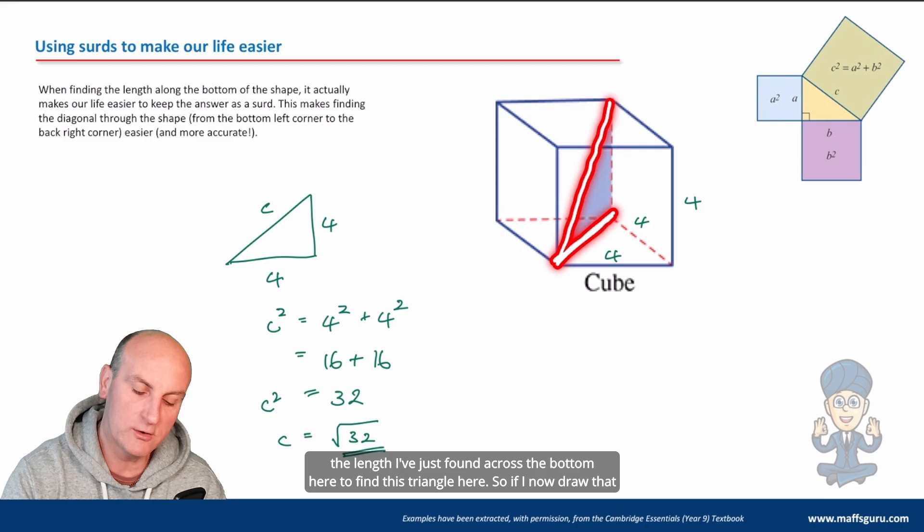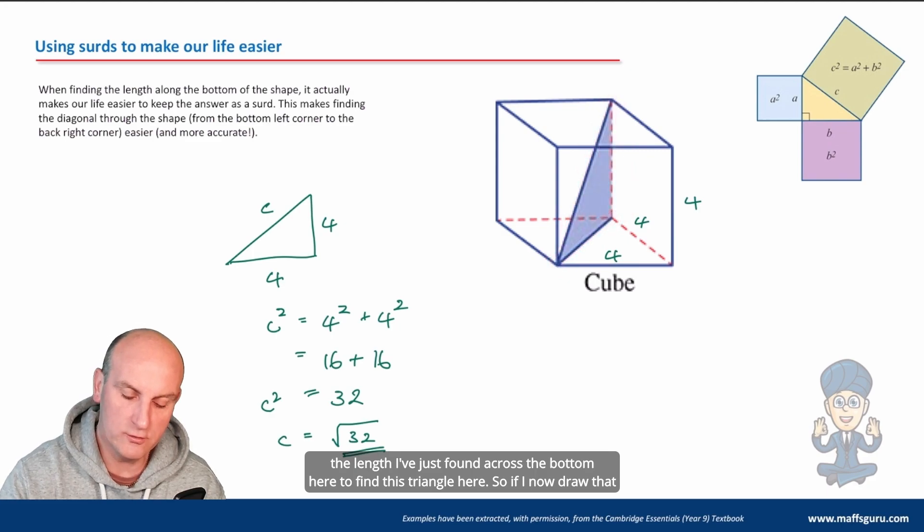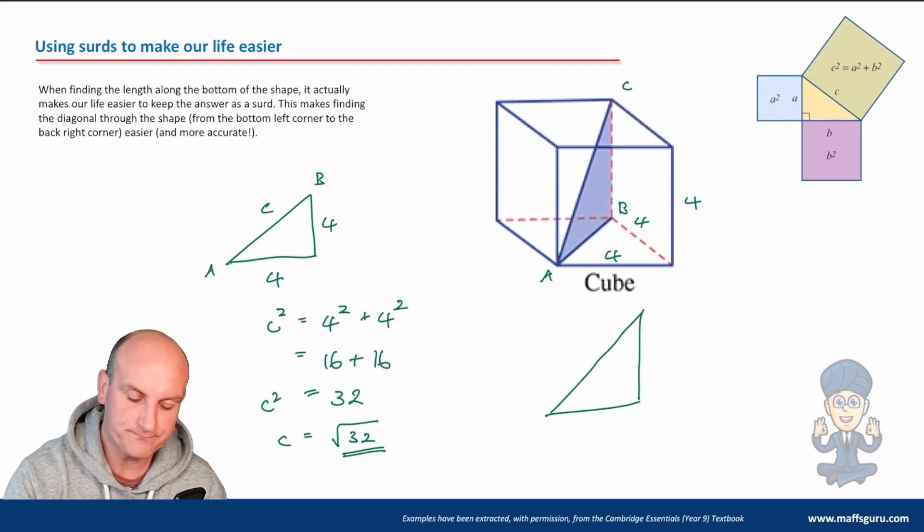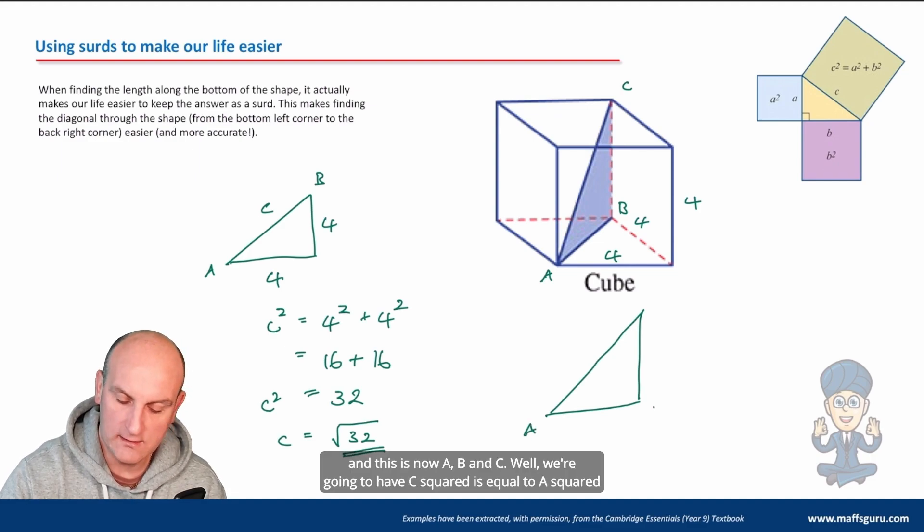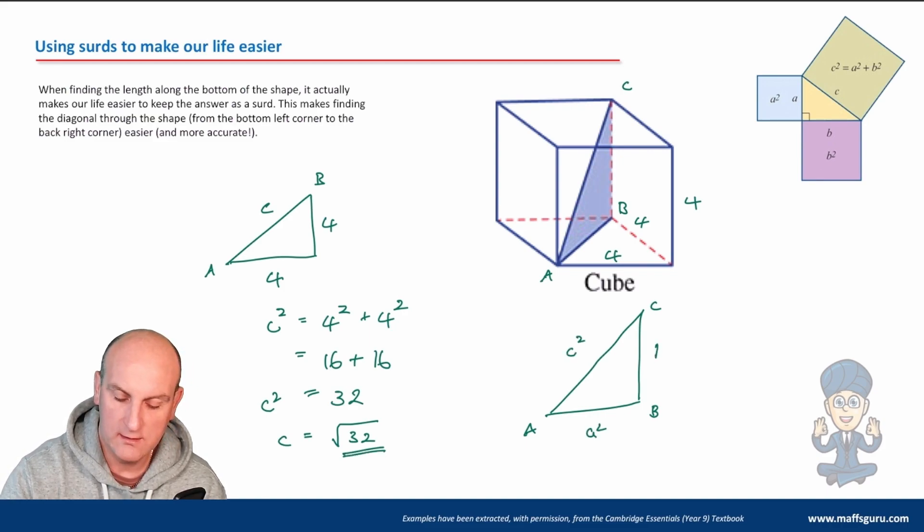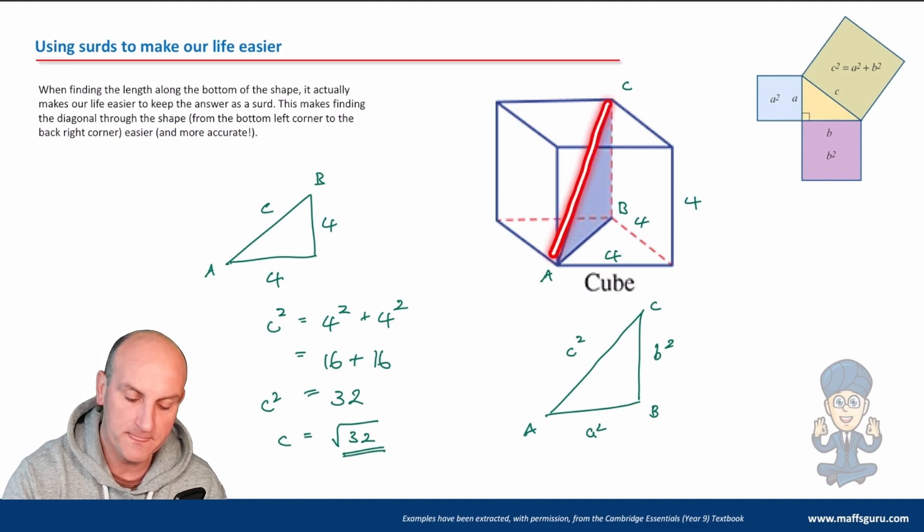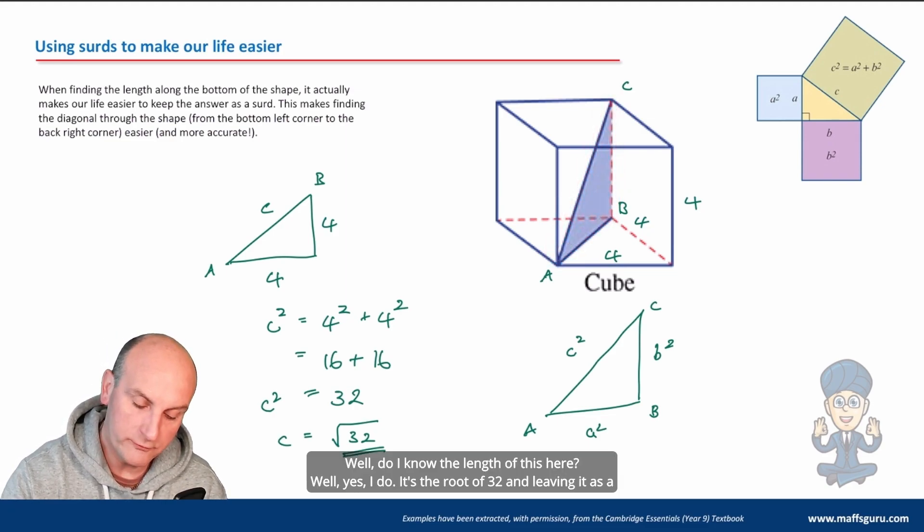Why? Well imagine what's going to happen next. We're then going to use the length I've just found across the bottom here to find this triangle here. So if I now draw that triangle there that bigger triangle and let's say let's call this A, B and C so this is A to B and this is now A, B and C. Well we're going to have c squared is equal to a squared plus b squared for my big triangle so we're looking at my big triangle here.